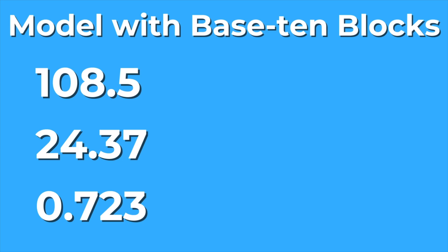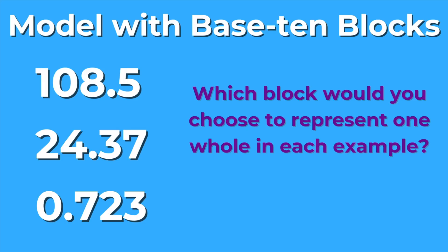Let's model three numbers with decimals using base 10 blocks: 108 and 5 tenths, 24 and 37 hundredths, and 723 thousandths. Before we start, think about this. Which block would you choose to represent one whole in each example? You'll see how my choice impacts the rest of the blocks.